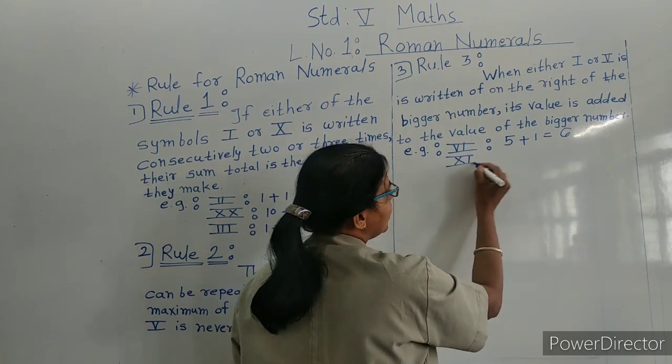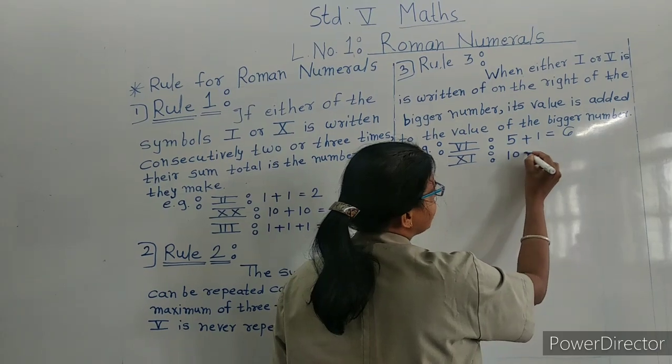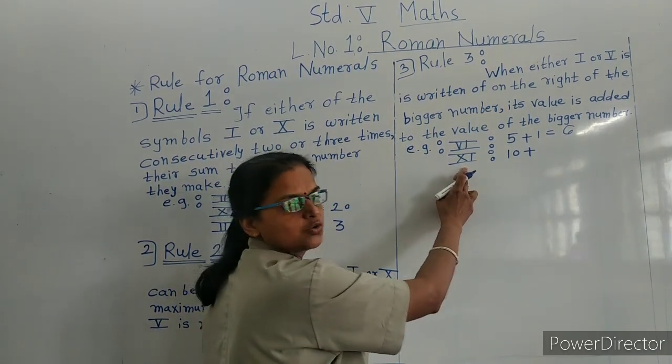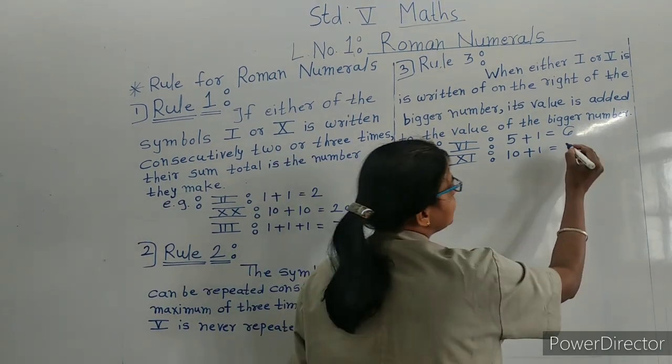Now XI: X value is 10, I's value is 1, so 10 plus 1 is 11.